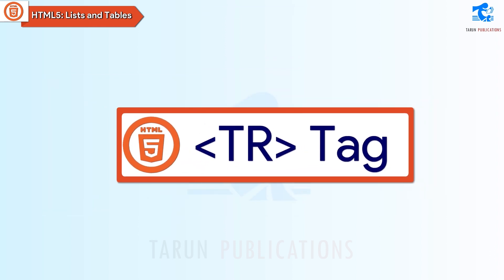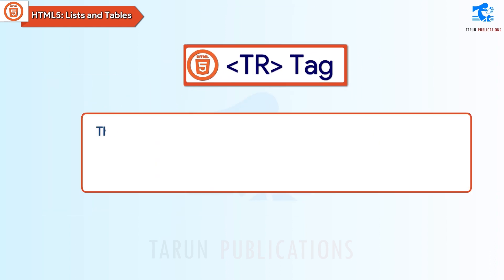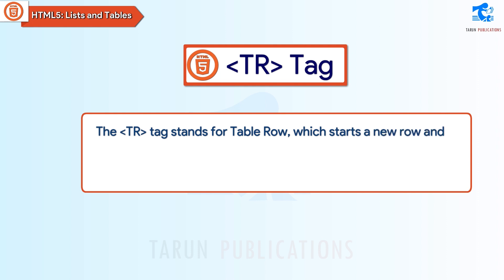TR Tag. The tr tag stands for table row, which starts a new row and ends with the closing tr tag. It is a container tag.